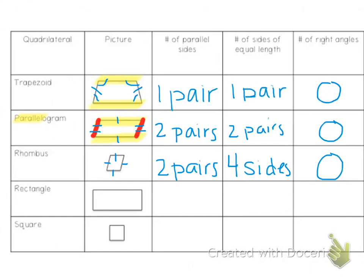A rectangle has two pairs of parallel sides, but it doesn't have to have all sides the same length. The top and the bottom are the same, and the left and the right are equal, so it has two pairs of equal sides. A rectangle has to have four right angles — all four corners are right angles.